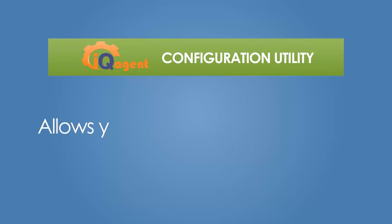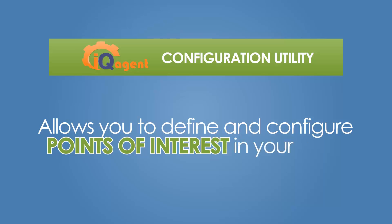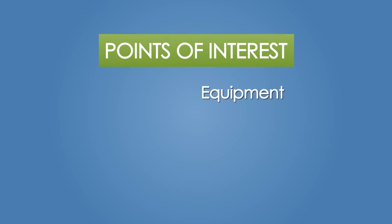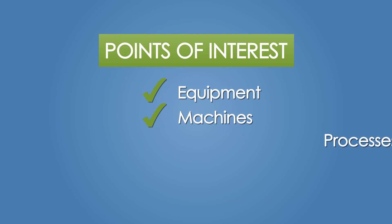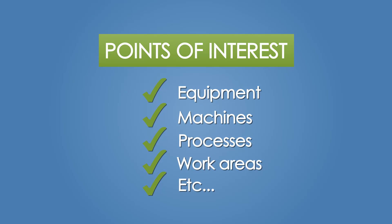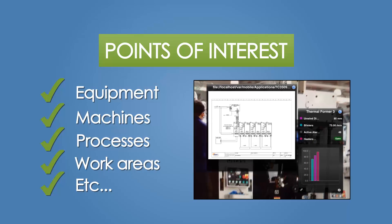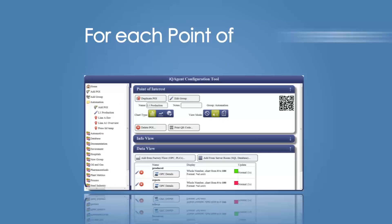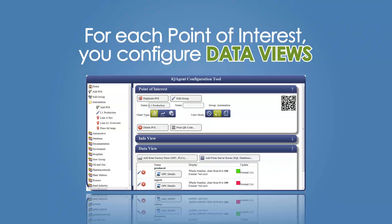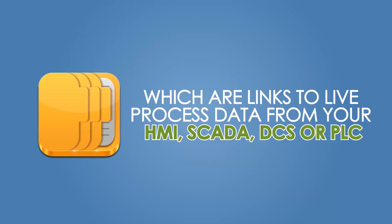The IQ Agent Configuration Utility allows you to define and configure points of interest in your plant. Points of interest can be equipment, machines, processes, work areas, or anything that can be characterized by data. For each point of interest, you configure data views.